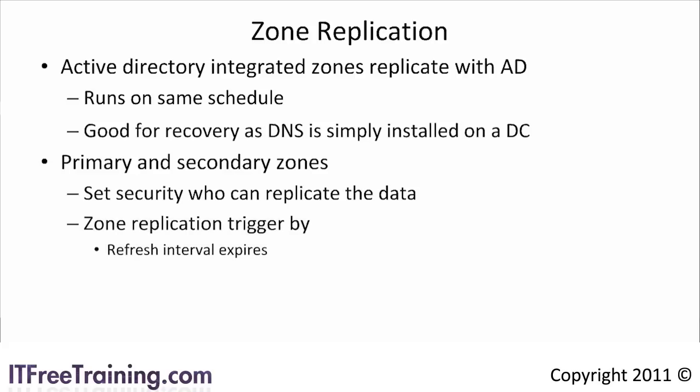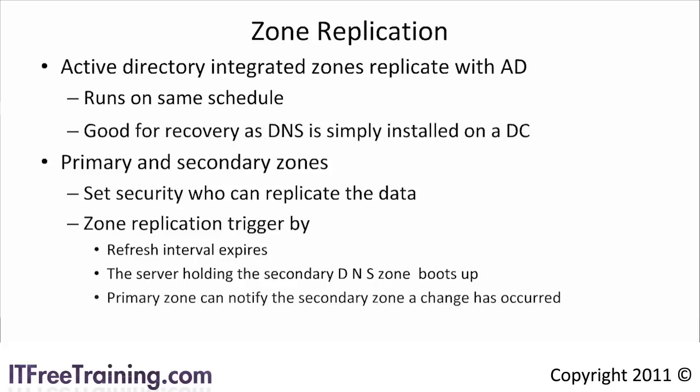The refresh interval is set in the start of authority record. The next way is when the server holding the secondary DNS zone boots up. The last way replication can happen is when the primary zone notifies the secondary zone that a change has occurred. When this happens, the secondary zone will request a zone transfer from the primary zone. To better understand how zone replications work, let's have a look at how to configure it.